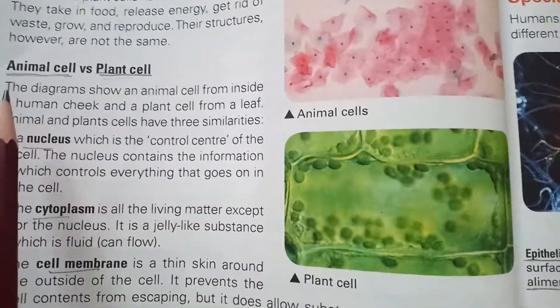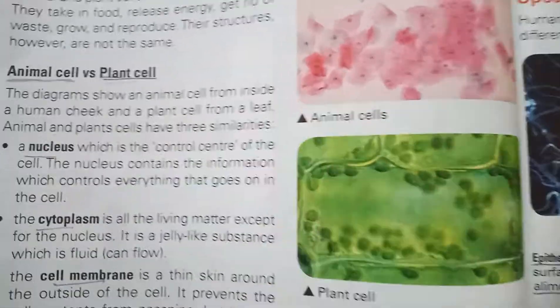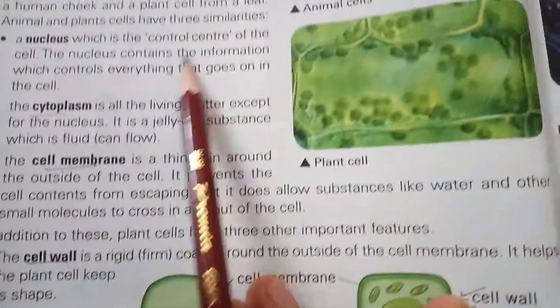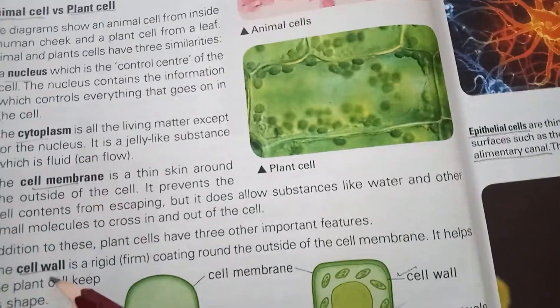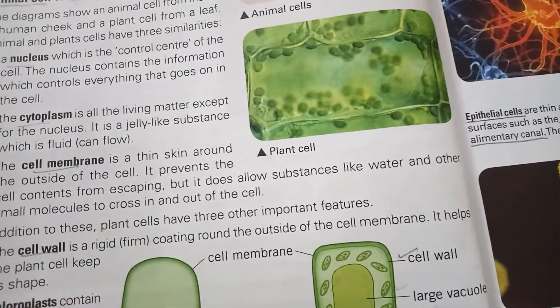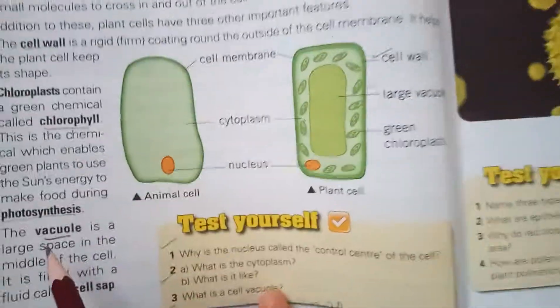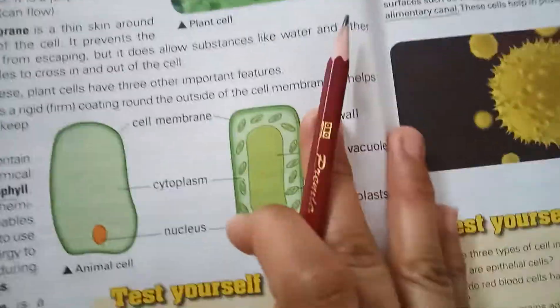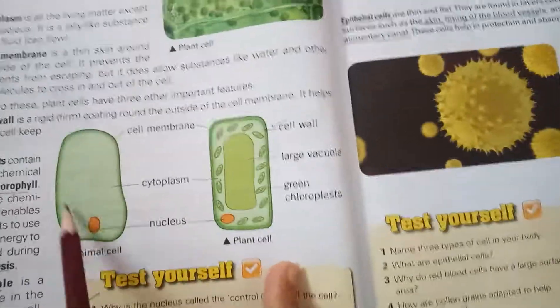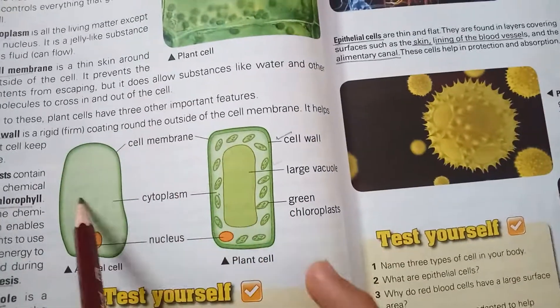The topic now is about animal cells and plant cells — the differences between them. The parts discussed include the nucleus, cytoplasm, cell membrane, cell wall, chloroplast, and chlorophyll. The process of photosynthesis and the vacuole are also covered, along with a comparison of animal cells and plant cells.